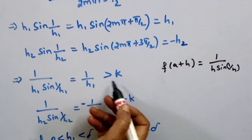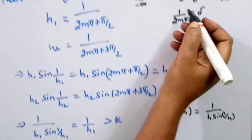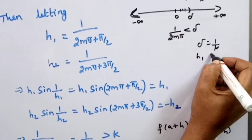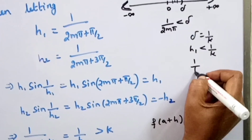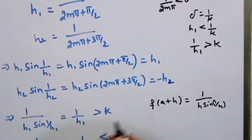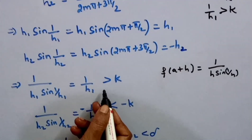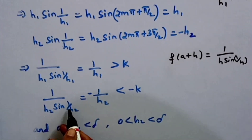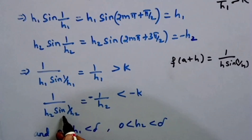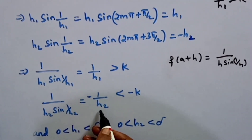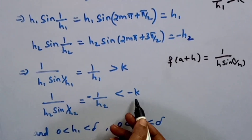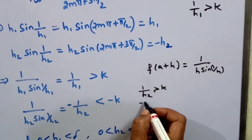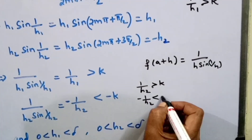The value of f(a+h₁) is greater than k. Since delta equals 1/k, and h₁ is less than 1/k, then 1/h₁ is greater than k. For h₂, the value of (1/h₂)·sin(1/h₂) equals minus 1/h₂, and this value is less than minus k. Since 1/h₂ is greater than k, multiplying by minus 1 reverses the inequality, giving minus k.